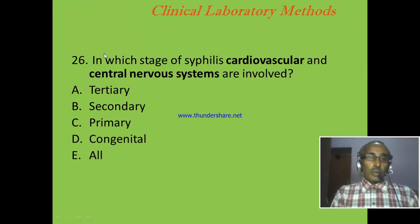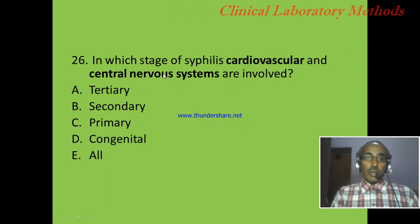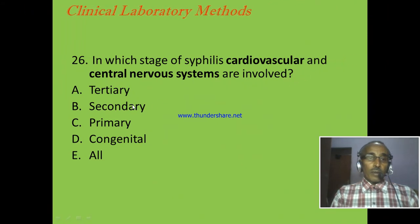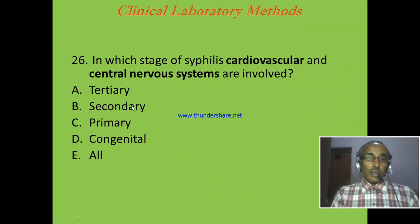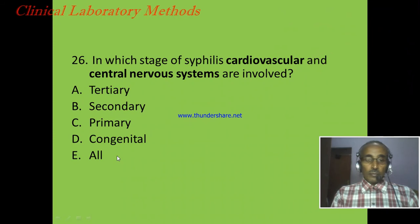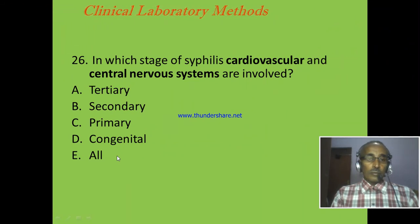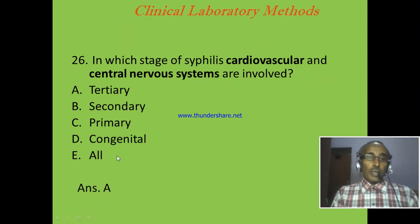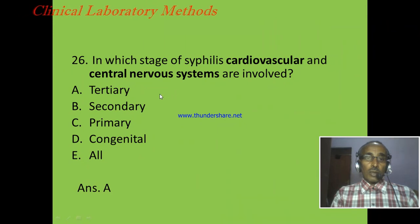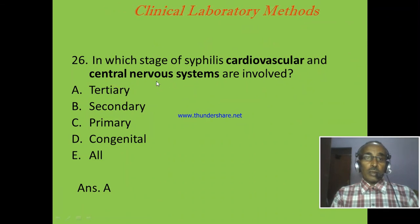Question 26: In which stage of syphilis are the cardiovascular and central nervous systems involved? A: Tertiary stage. B: Secondary stage. C: Primary stage. D: Congenital infection. E: All. The correct answer is A: tertiary stage, because during this stage the bacteria further disseminate to different organs and infect the cardiovascular and central nervous systems.